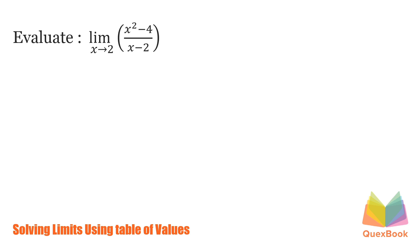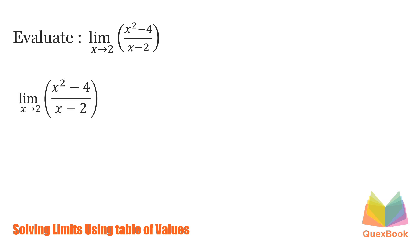Find the limit of x squared minus 4 over x minus 2 as x approaches 2. Now, in solving limits like this, the first thing we can do is to plug in 2 to the equation in hoping we can have a favorable output.